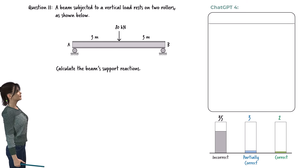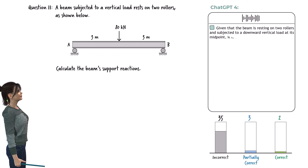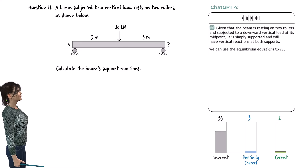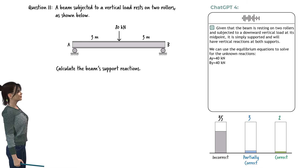A beam subjected to a vertical load rests on two roller supports. Calculate the beam support reactions. Given that the beam is resting on two rollers and subjected to a downward vertical load at its midpoint, ChatGPT treated it as simply supported and solved: AY equals 40 kilonewtons, BY equals 40 kilonewtons. Incorrect. The beam is unstable because it rests on only two roller supports; however, ChatGPT attempted to solve the problem as if the beam was stable.